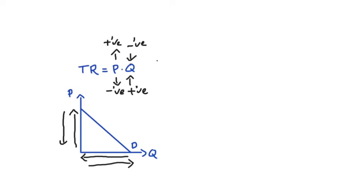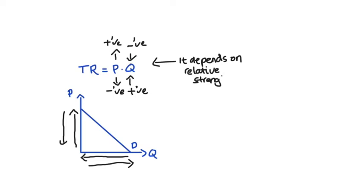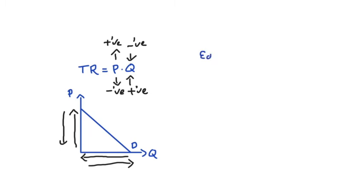This is where our elasticity comes in, because the answer to what happens to total revenue in each case depends on how strong the price and quantity changes are relative to one another. If our quantity changes are quite large relative to our price changes, then the effect associated with that quantity change will be dominant, and vice versa. Our elasticity of demand is exactly the measure that tracks these considerations.